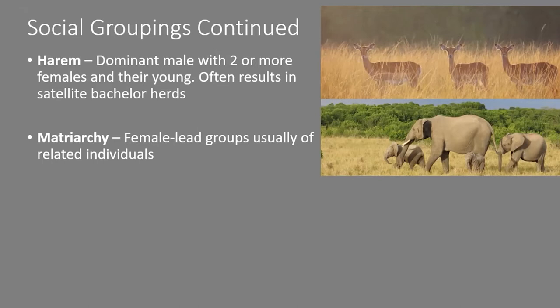If we look at hyenas by comparison, spotted hyena social structure is much more of a dominatrix structure rather than a benevolent, motherly relationship. You've got a queen at the top who rules with an iron fist, and dominance within spotted hyenas is hereditary — the oldest female cub of the dominant female will be the one to take her place. There's some jostling among females within each litter for position, but the highest-ranking male is still lower than the lowest-ranking female within spotted hyena social structure.